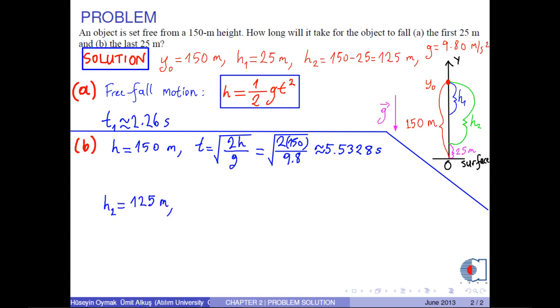And, for the last 25 meters, we have h2 equals 125 meters. Then, we have time t2 as square root of 2 times 125 meters over 9.8 meters per second squared.